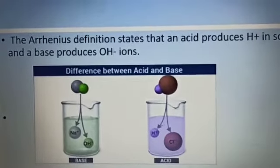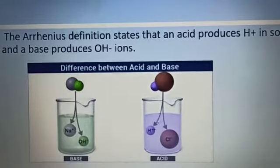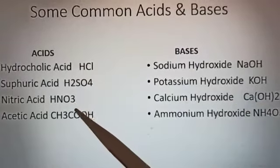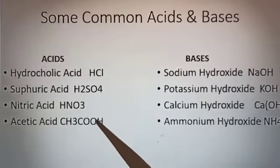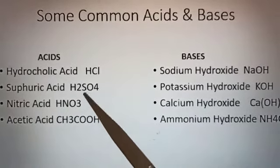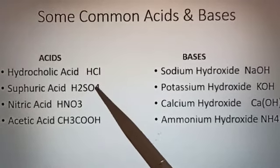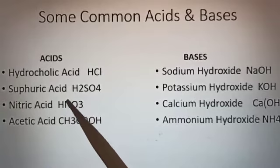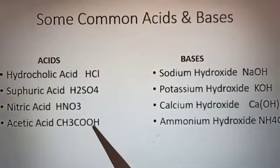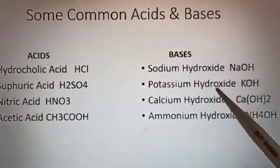See this slide. When you are writing the examples of acids, if you see the formula, something is common in all. What is common is that every acid has H+ ions. See HCl: H+ plus Cl-. H2SO4: H+ plus SO4 ions. HNO3: H+ ion and NO3- ions. CH3COOH: CH3COO- ion and H+ ion. In the same way if you are looking at bases, you can see the formulas.